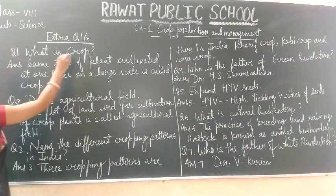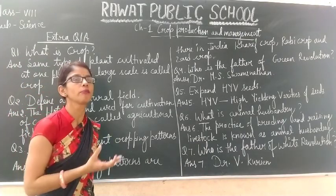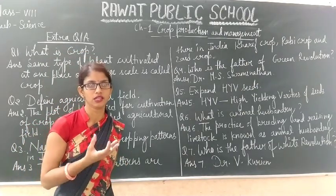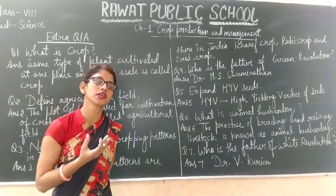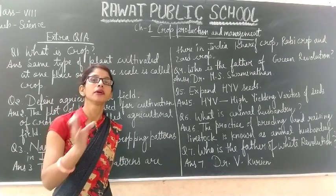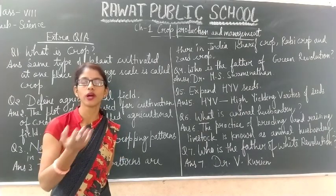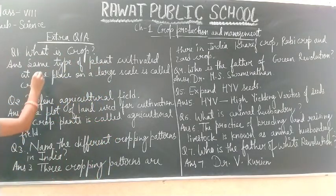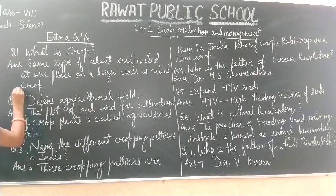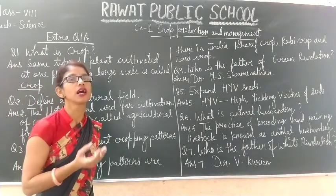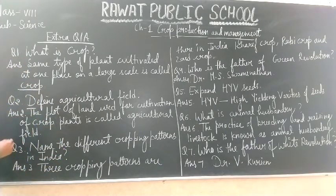Question one: What is a crop? Crop means when the same type of plants are grown on a large scale on the same patch of land. If we grow cereal plants, it is a cereal crop. If we grow pulse plants, it is a pulse crop. If we grow fruit plants on a large scale, it is known as a fruit crop. So, same type of plants cultivated at one place on a large area is known as a crop.